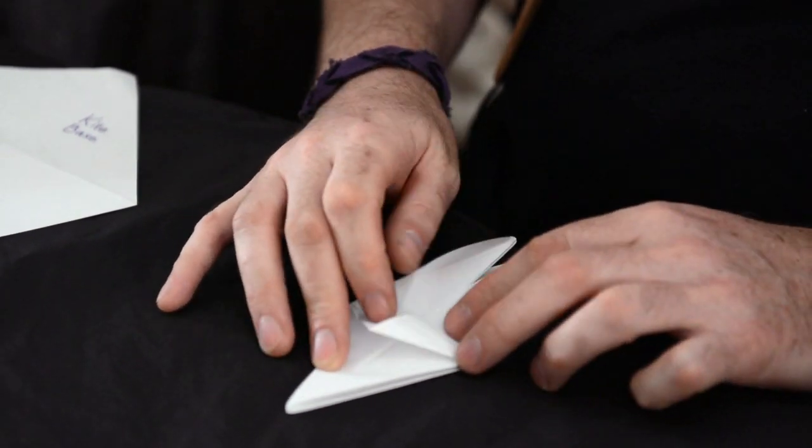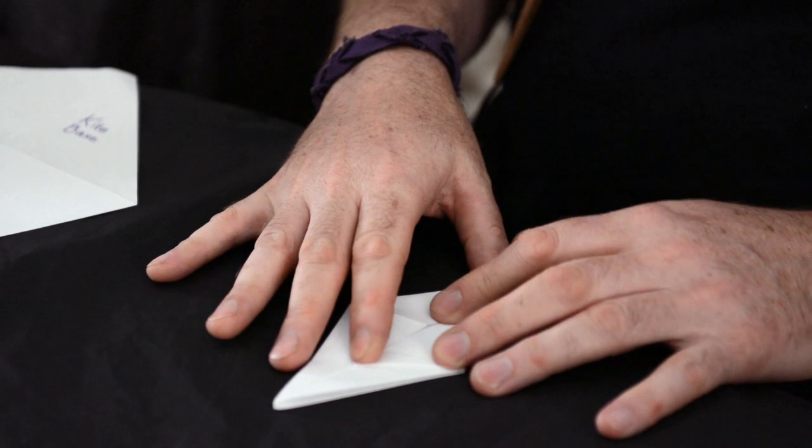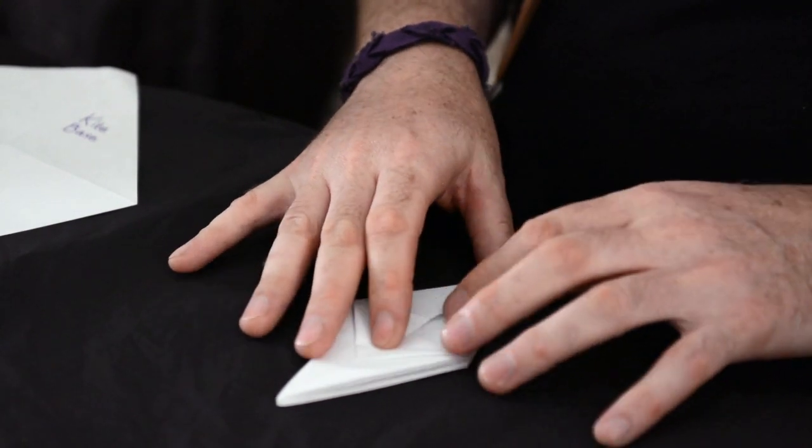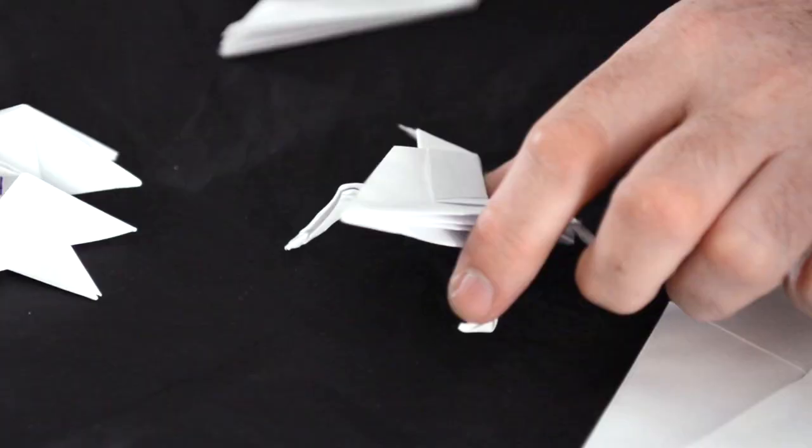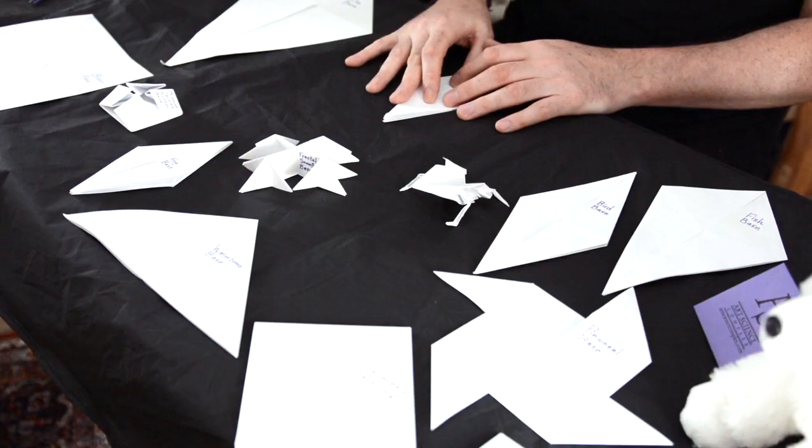Bases are the beginnings from which other shapes come forth. This is called the frog base because the piece most obviously associated with it is the origami frog.